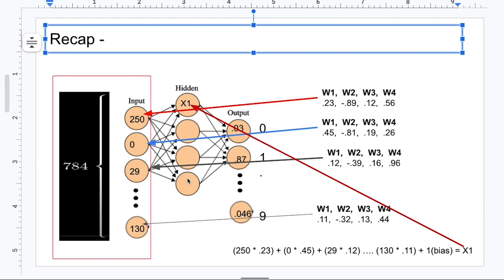Just to recap, we have an input layer whose values come from some data. In our example, we are using the MNIST dataset, which is hand-drawn digits from zero to nine. And the amount of rows in that dataset determines the amount of neurons in the input layer.